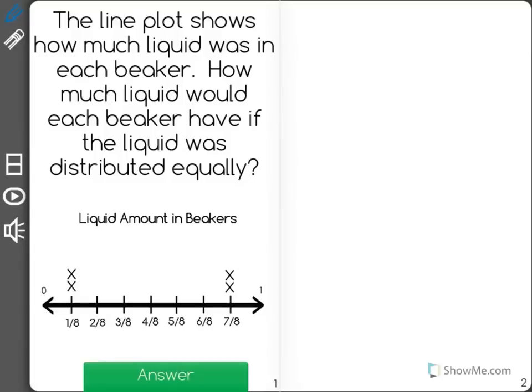First, let's find out the total. We have 2 at 1 eighth. Two beakers had 1 eighth of a cup for a total of 2 eighths cup.